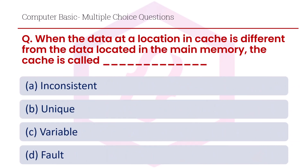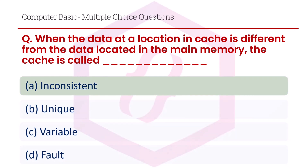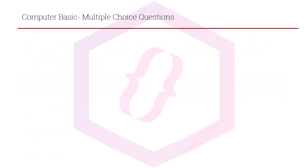When the data at a location in cache is different from the data located in the main memory, the cache is called: option A inconsistent, option B unique, option C variable, option D fault. The right answer is option A, inconsistent.